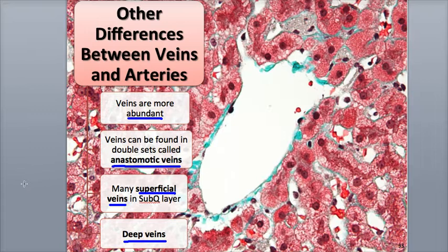The deep veins drain most of the blood in the lower part of a limb, while the superficial veins drain most of the blood from the upper part of a limb back to the heart.